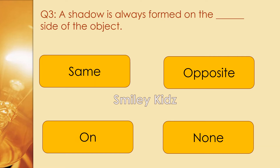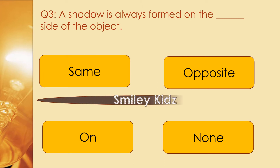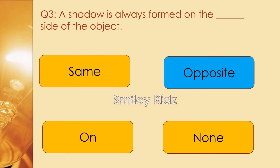Question number 3. A shadow is always formed on the dash side of the object. Options are safe, opposite, or none. The right answer is opposite. A shadow is always formed on the opposite side of the object.